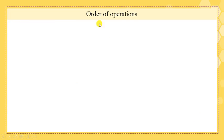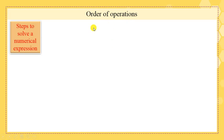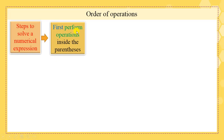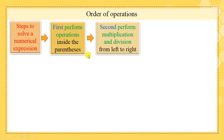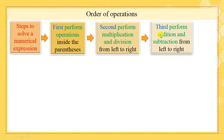Order of operations: steps to solve a numerical expression. First, perform operations inside the parentheses. Second, perform multiplication and division from left to right. Third, perform addition and subtraction from left to right.